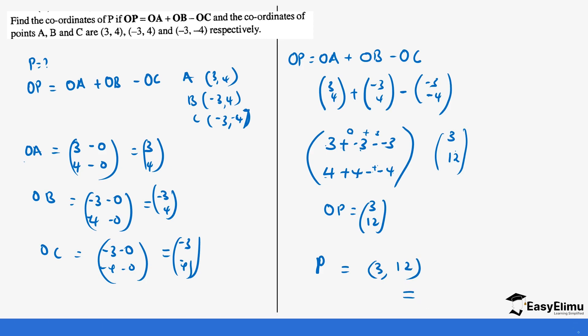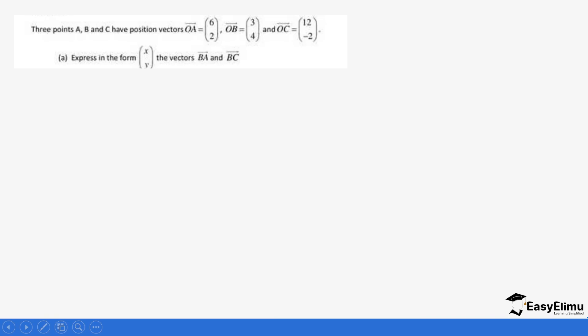I hope you have understood how we did that. Let's look at a few more questions. Three points A, B, C have position vectors OA, OB, and OC. Express in the form (x, y) the vectors BA and BC.